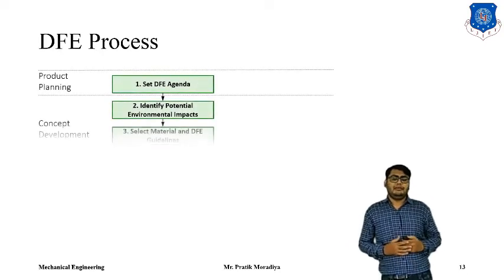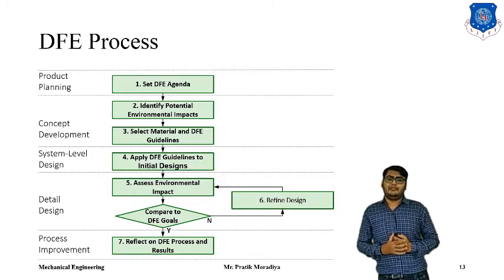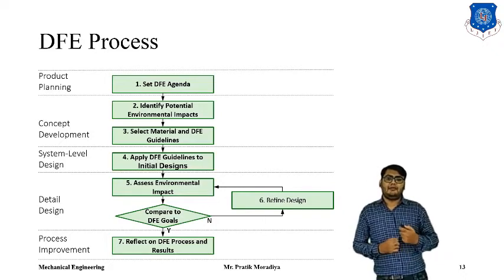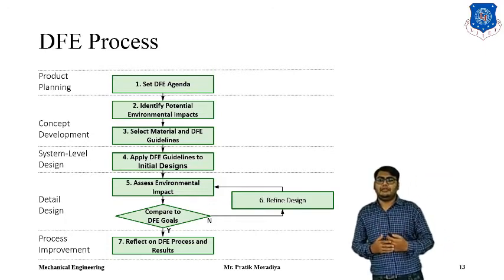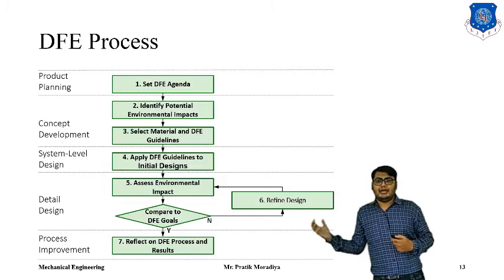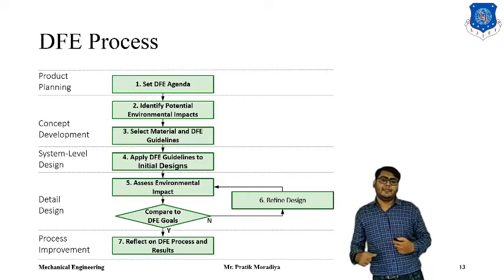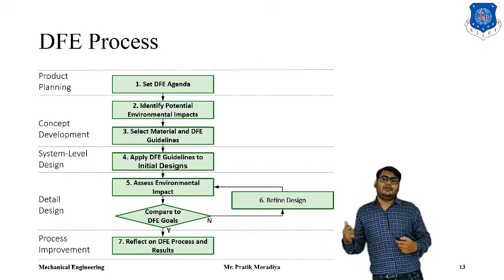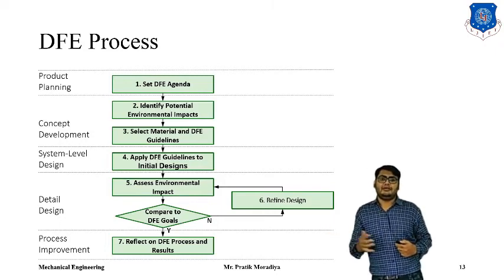Now let us look at the design for environment process flowchart. First, we decide our design for environment agenda. Then we identify the potential environmental impacts of our design and follow guidelines to reduce those impacts. Then we ask whether our design is good enough. If not, we go back to redesign; if yes, we proceed with production of the new design. This is very similar to design for manufacturing, but instead of focusing on cost, we focus on reducing the impact on the environment.